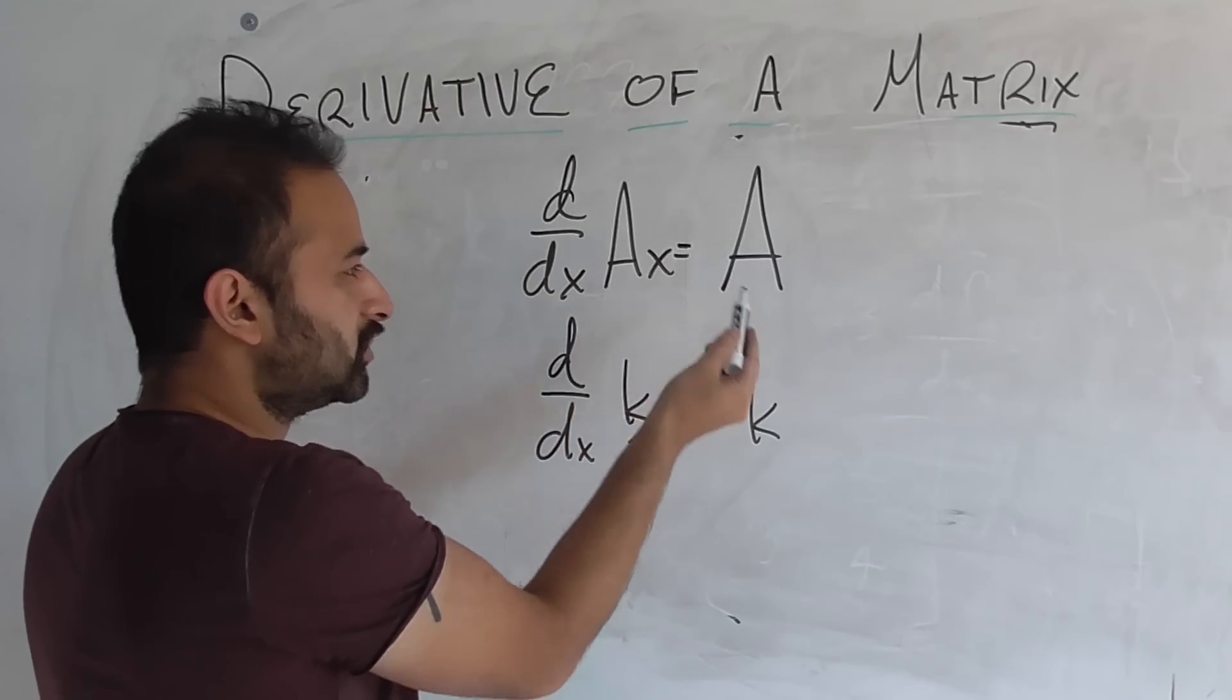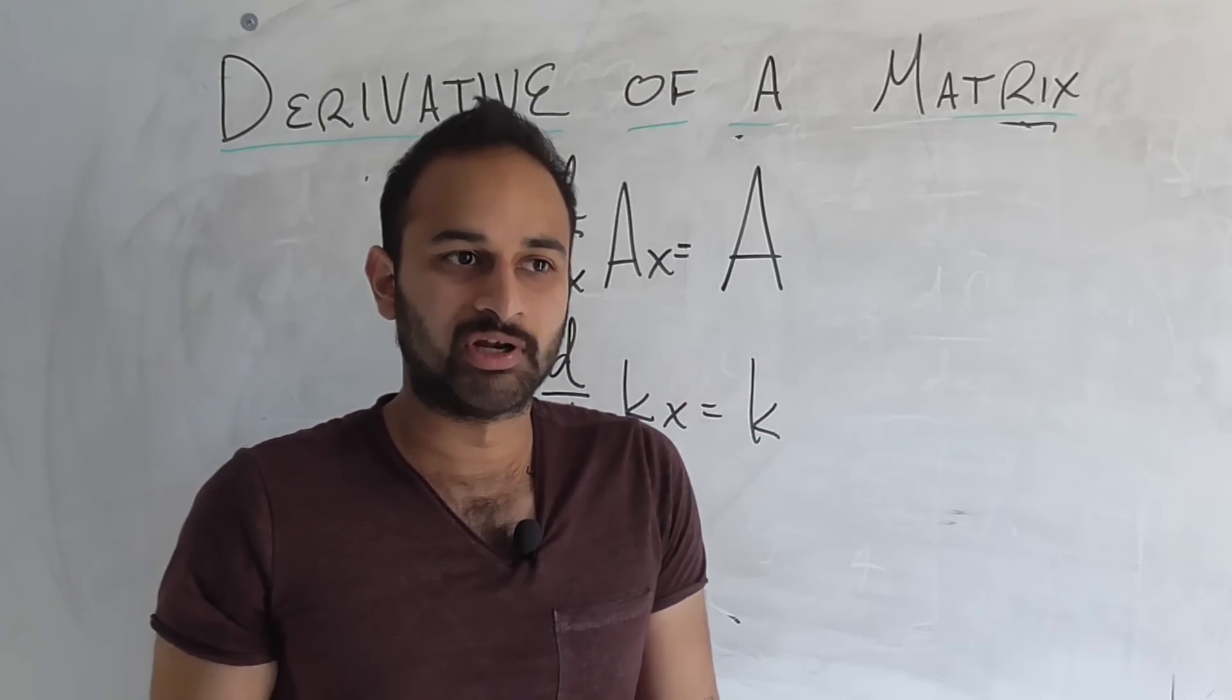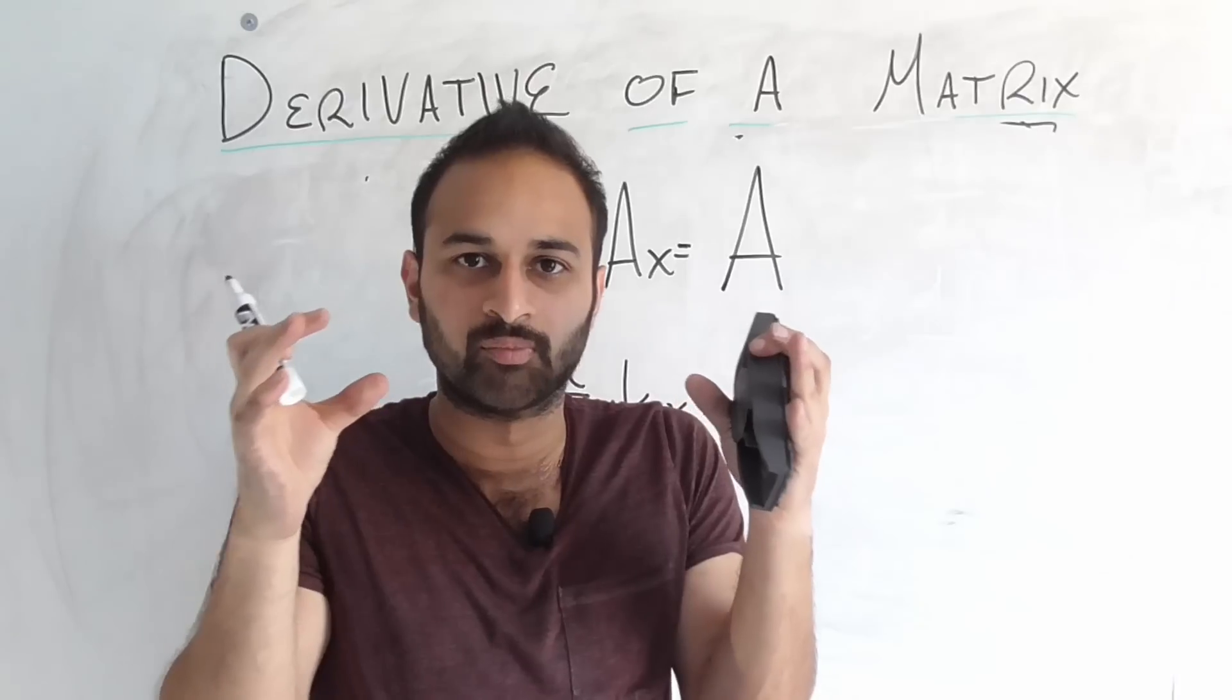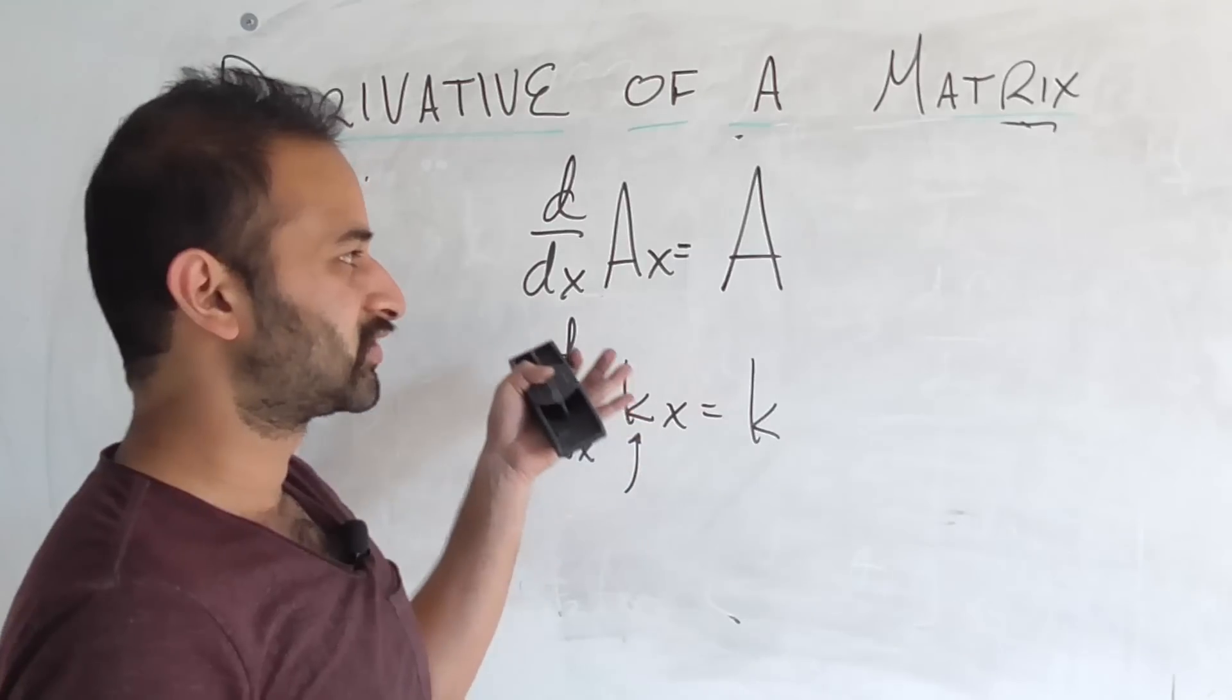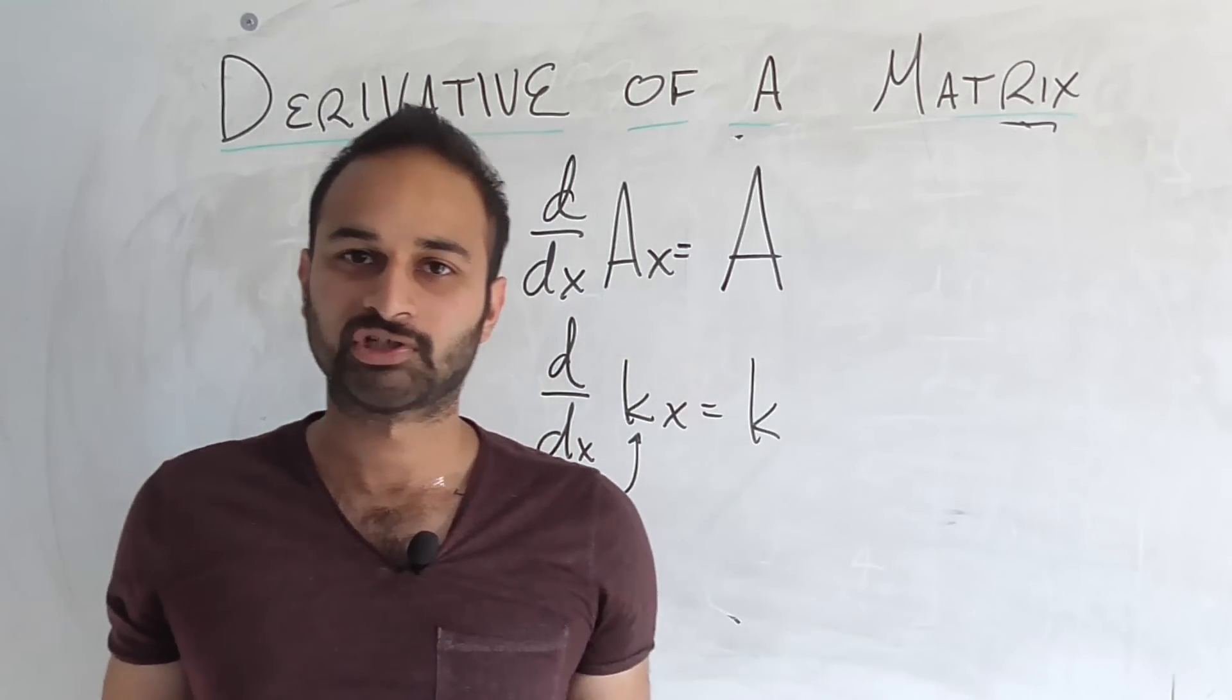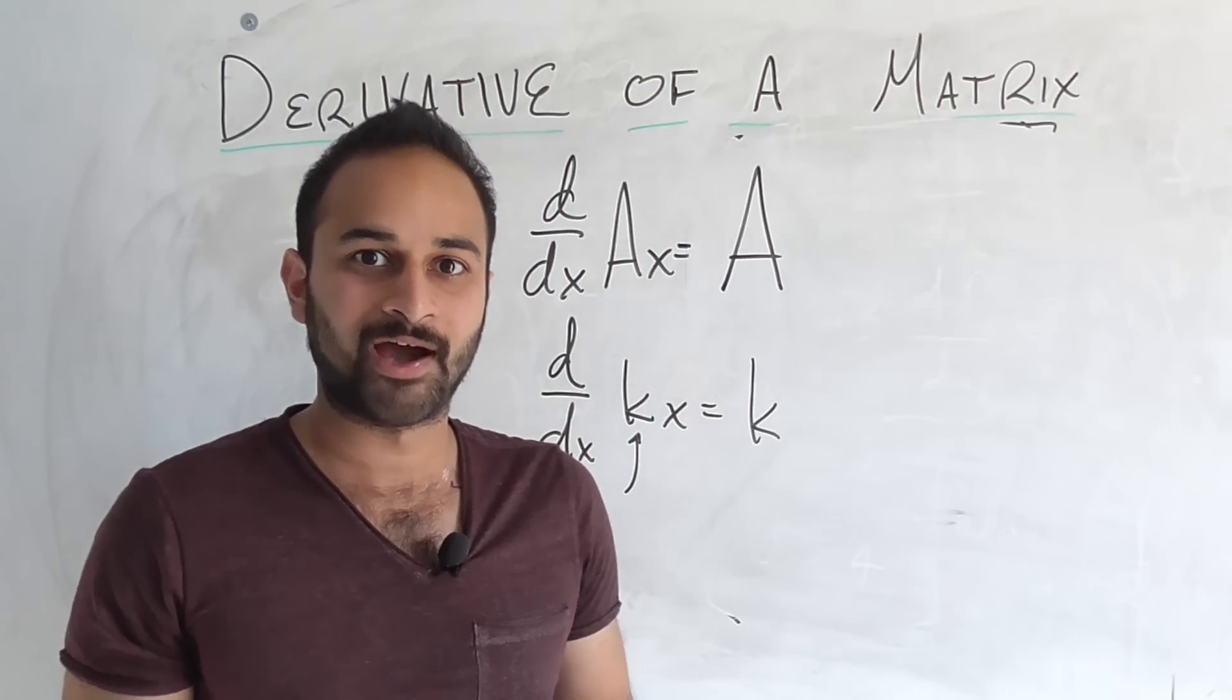In the same way, this matrix A is not a scalar, but it's a collection of scalars in a little box. And we find that when we take the derivative of A times x, we get that collection of scalars in a little box back, which is awesome. It's just kind of elegant that way.